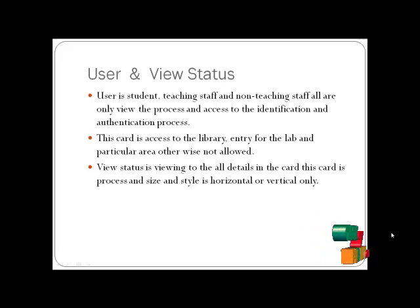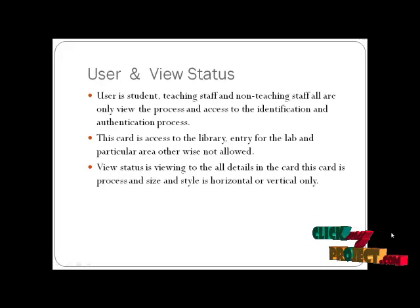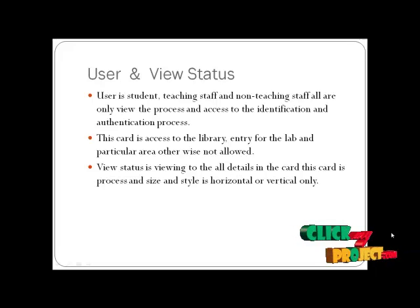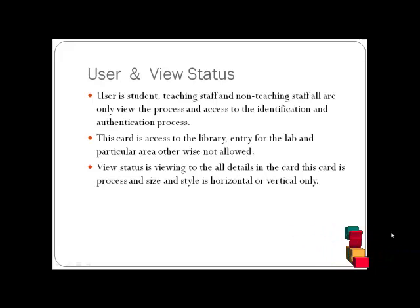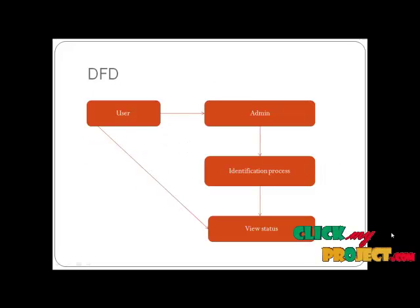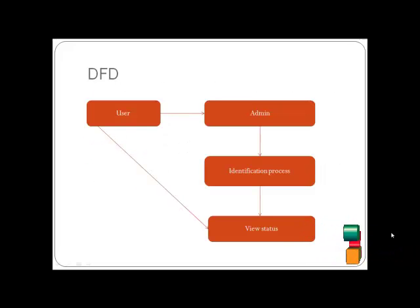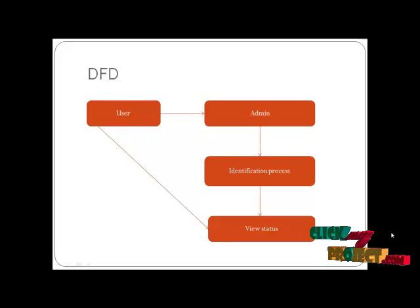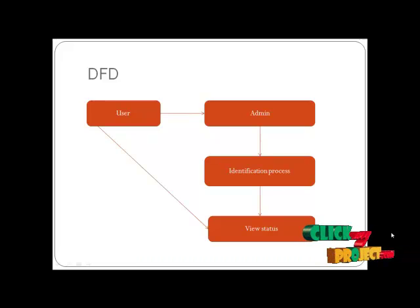The card code has a process with size, style, and horizontal or vertical orientation. The data flow diagram shows User and Admin. The User is directed to View Status. Admin verifies the process and then views the status.